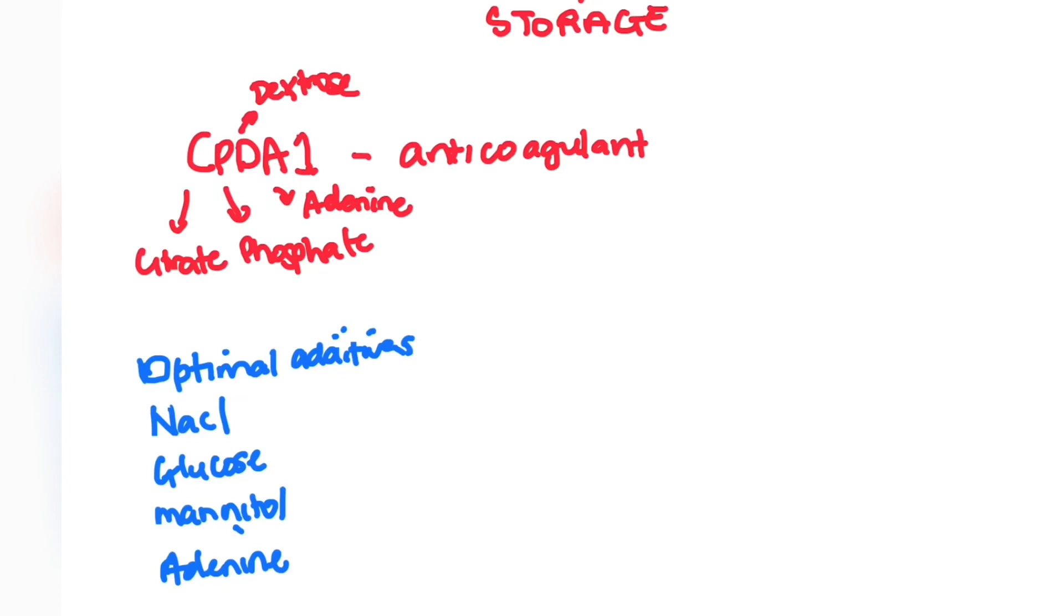With optimal additive, they basically have a solution containing sodium chloride which is salt, glucose, mannitol, and also adenine. After they have treated the blood with citrate, they basically would put it in the optimal additive solution, and this just increases the survival of the red blood cells.